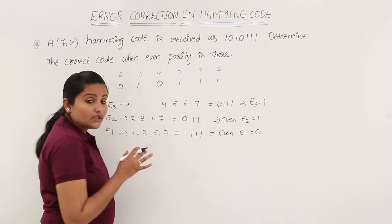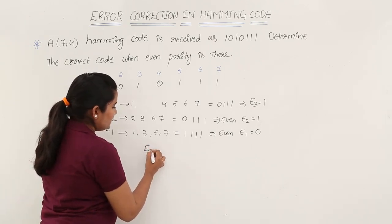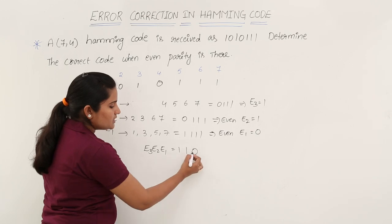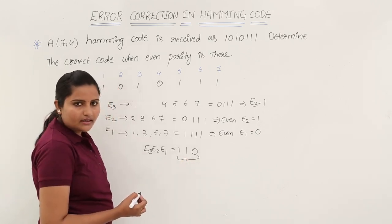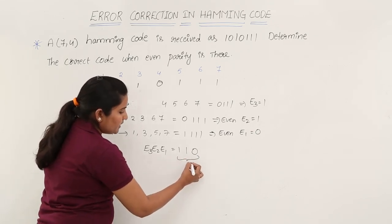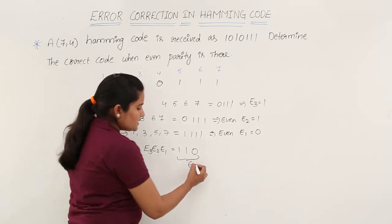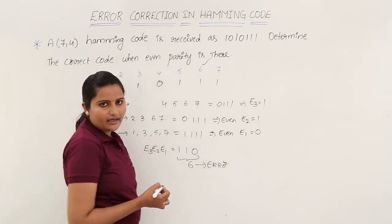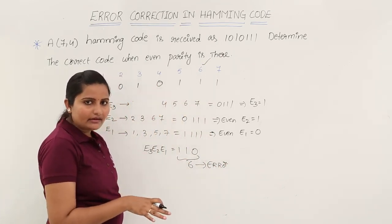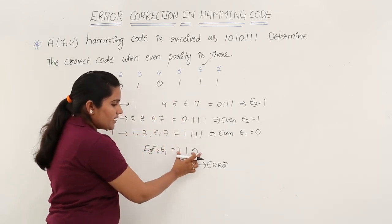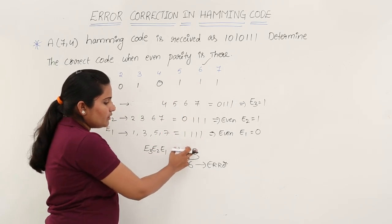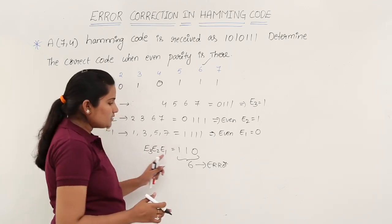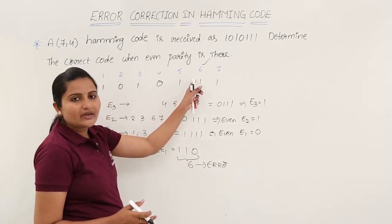Finally, the error place is defined by combining E3, E2, E1 as a binary number: 1, 1, 0. Converting binary 110 to decimal gives 6. This means the error is at bit position 6. If there were no error, all E values would be 0. But since we got error place 6, the 6th bit is definitively in error.